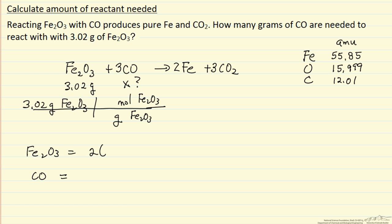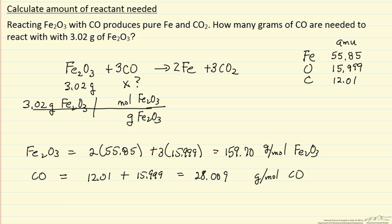Now I can calculate iron oxide and carbon monoxide. For iron oxide there's 2 iron plus 3 oxygens. And for carbon monoxide there's 1 carbon and 1 oxygen. So 159.70. This will give me the moles of iron oxide.